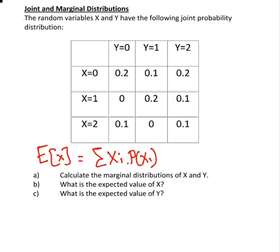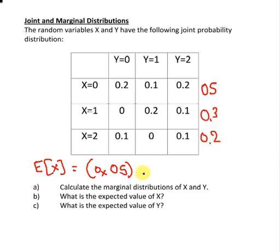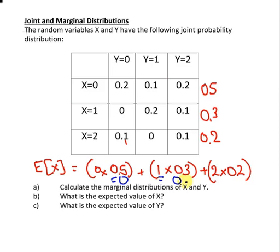So the expected value of X is 0 times 0.5, I'm just going to put these back in here again for a second, plus 1 times 0.3, plus 2 times 0.2. So that's 0 plus 0.3 plus 0.4.